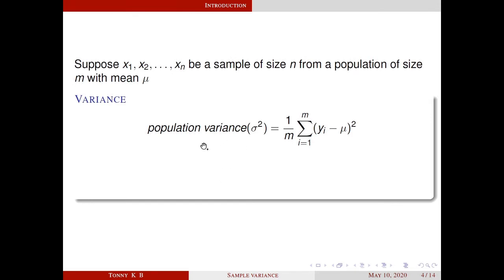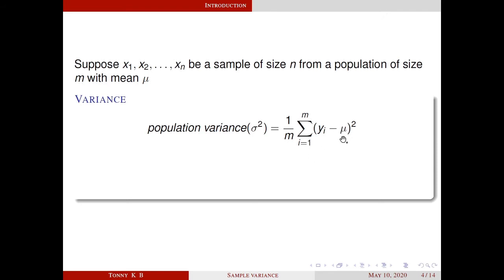Next, we are going to define population variance. Suppose x1, x2, ..., xn be a sample of size n from a population of size m with mean mu. Then population variance sigma square is defined as 1 by m, sigma i equals 1 to m, yi minus mu, all squared. So population variance is the average of squares of deviations from the mean mu.